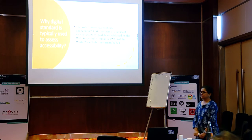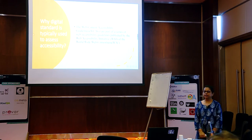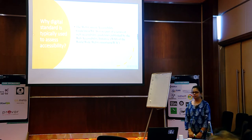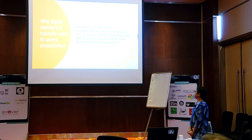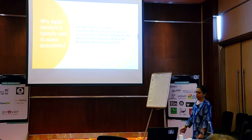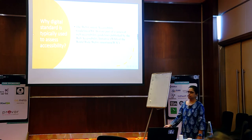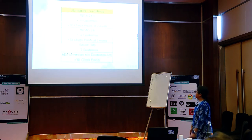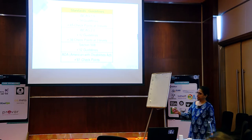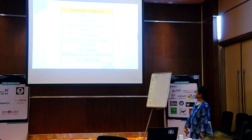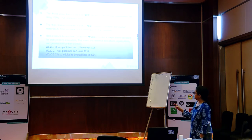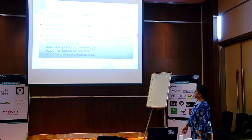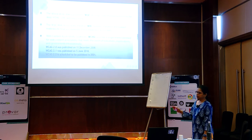Why is a digital standard required to assess accessibility? If you have to measure something without any metric, how would you measure? You have different guidelines provided by the World Wide Web Consortium — the same body that designs rules for HTML, CSS, and other web-based technologies. They have different guidelines for each level with different checkpoints. The first guideline came in 2008 as WCAG 2.0, then 2.1 in 2018, and WCAG 2.2 was published and updated in 2022.